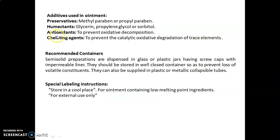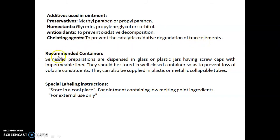Examples of antioxidants are BHA (butylated hydroxyanisole) and BHT (butylated hydroxytoluene). The best example of a chelating agent is EDTA — ethylenediamine tetraacetic acid — which is also known as a sequestering agent. Recommended containers: semi-solid preparations are dispensed in glass or plastic jars having screw caps with an impermeable liner.